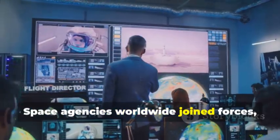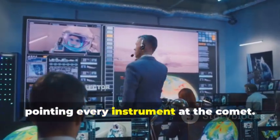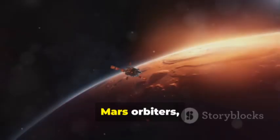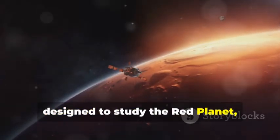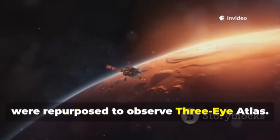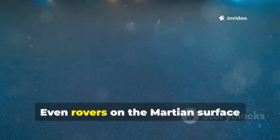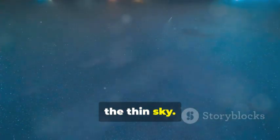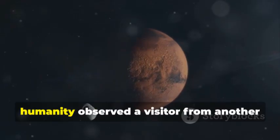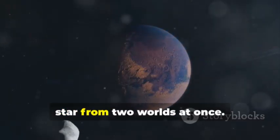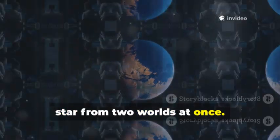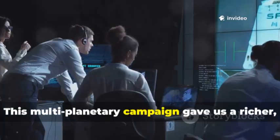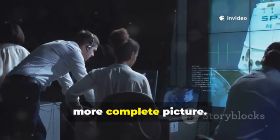Space agencies worldwide joined forces pointing every instrument at the comet. Mars orbiters designed to study the red planet were repurposed to observe 3I Atlas. Even rovers on the Martian surface captured images of the comet blazing in the thin sky. For the first time, humanity observed a visitor from another star from two worlds at once. This multi-planetary campaign gave us a richer, more complete picture.